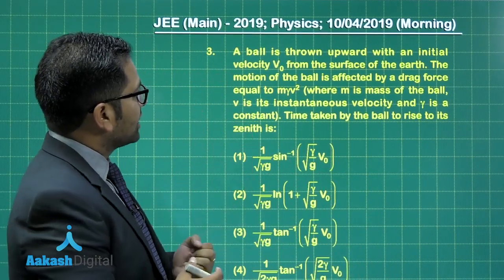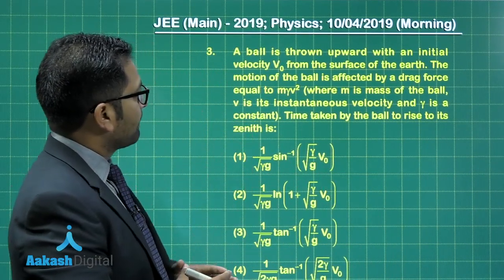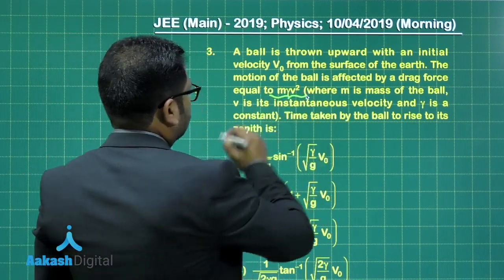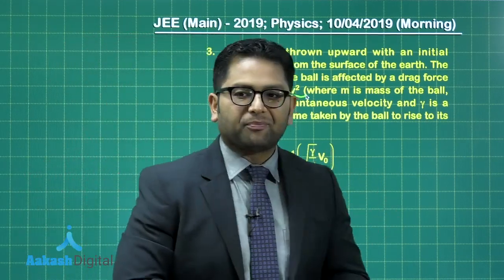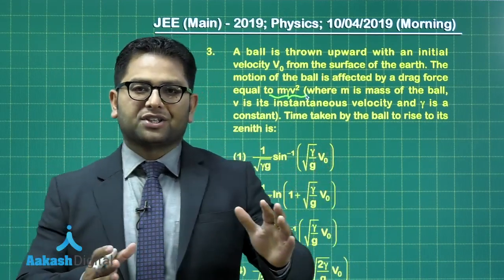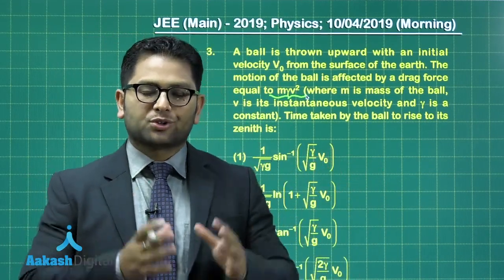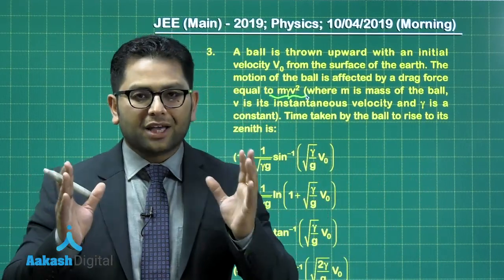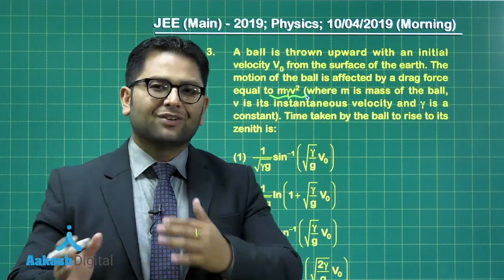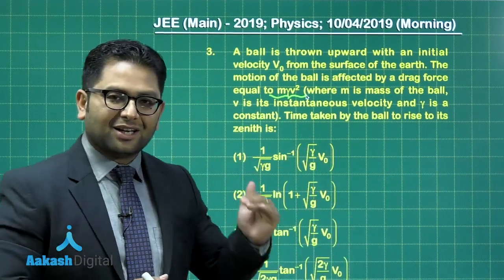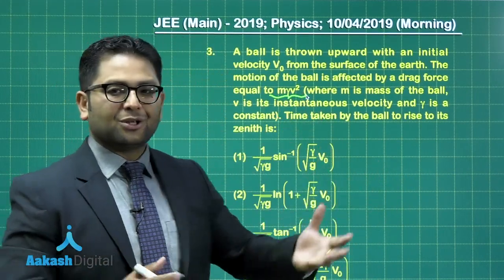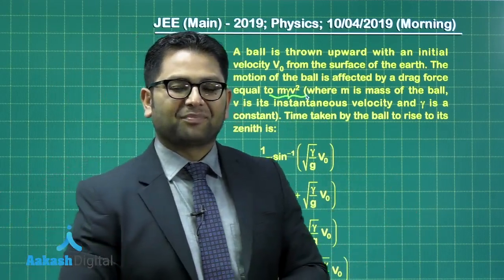a ball is thrown upwards with an initial velocity V₀ from the surface of the earth. The motion of the ball is affected by a drag force, and this time, the drag force is something like this: mγV². So, different from the regular feature, where the viscous force, or the drag force, was taken directly proportional to V. So, this one is something different, and will not quarrel on that, because much of the viscosity question is empirical based. And even, leaving apart all those things, here, it's a question of kinematics, and we are not at all interested about the cause. Whatever is the data given, we just rely on that. We make a mathematical calculation.